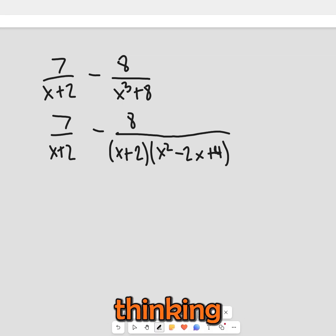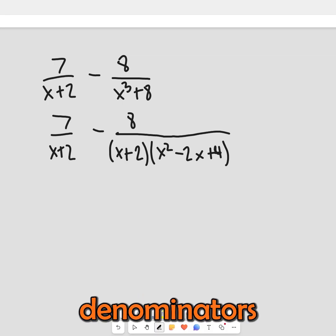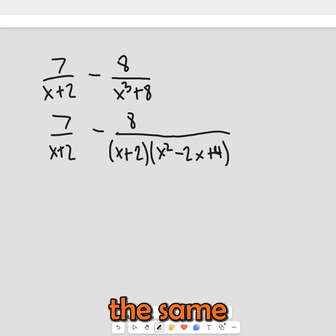Now what we want to start thinking about is how can we make these denominators the same. We need to have the same denominator for each expression in order to subtract. So generally what you do is you think what do these expressions have in common? They have in common the x plus 2.